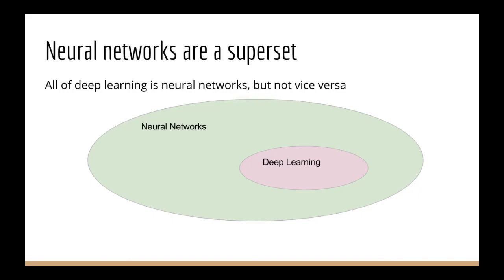Let's look at a diagram that I think will give you a fuller picture. Neural networks actually form a superset of deep learning. In other words, all deep learning is neural networks, but not all neural networks are deep learning. There are several types of neural networks that do not appear in modern deep learning literature.